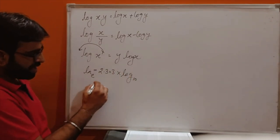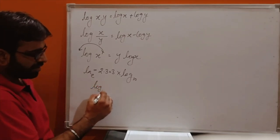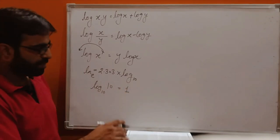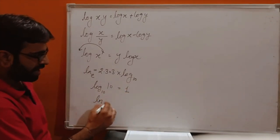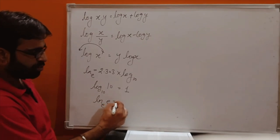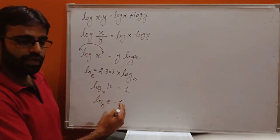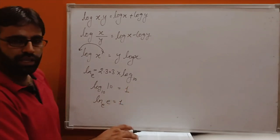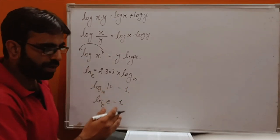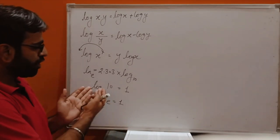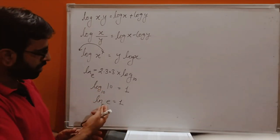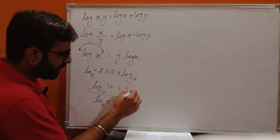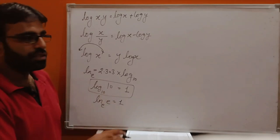Log 10 with base 10 is equal to 1. Similarly, natural log e with base e is equal to 1. So if any value is the same as the base, its result is 1. The log table in your books is with base 10, not base e. So we find values with base 10. These are some rules.